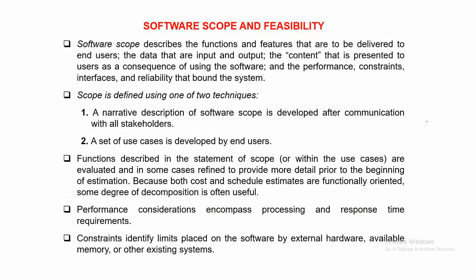On the contrary, if you include too many things inside the scope — everything that everybody wants — but it is not practically feasible for you to develop good quality software because of so many things included in scope, that is also a problem. So there is a very narrow margin between scope and feasibility.